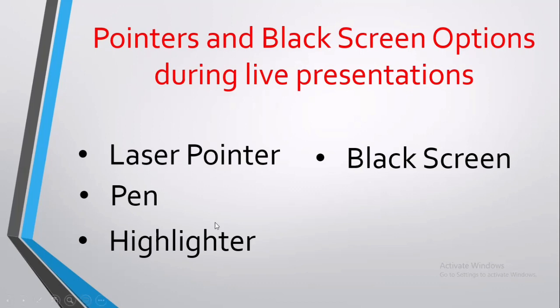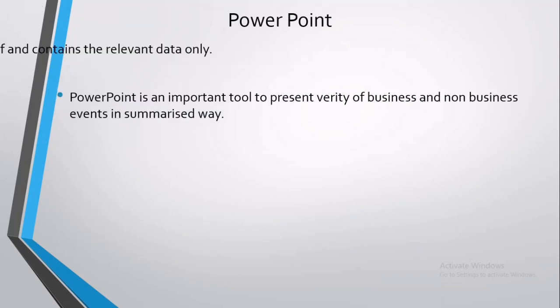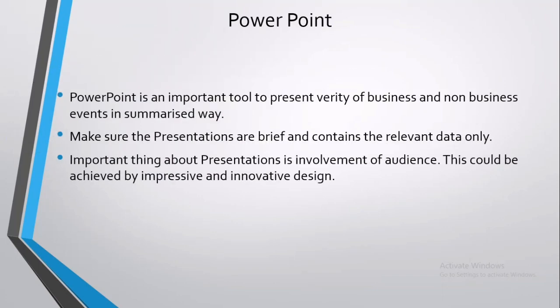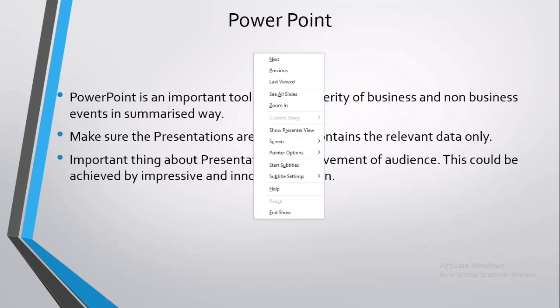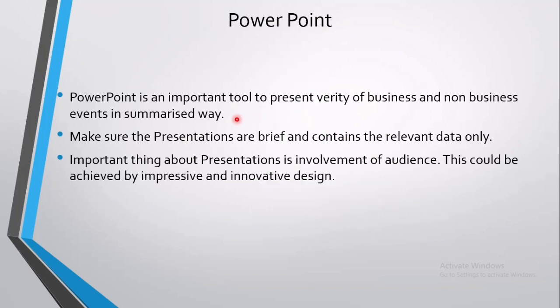Let's see how these things work with an example. I'm going to use this text to demonstrate these different options. For example, I want to point to some area here and use a laser pointer — so right-click on your screen, go to the pointer options, and select the laser pointer.